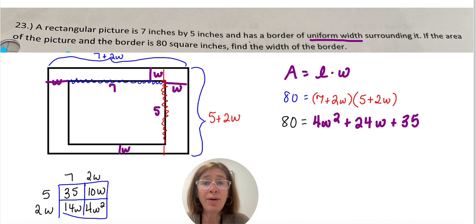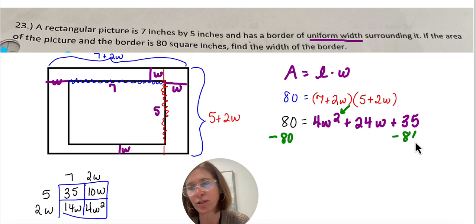Okay, so now I have a quadratic equation because the highest exponent of my variable is a 2. So that's telling me it's quadratic. So now I've got to get it set equal to 0. So I'm going to subtract 80. Remember, quadratics we want to get set equal to 0.